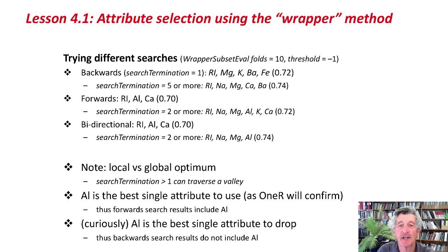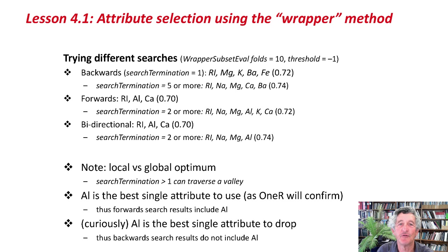It turns out that on this dataset, AL is the single best attribute to use — OneR will confirm that for you. So all forward search results will include AL. And curiously, AL is also the best single attribute to drop. So if you start with the full set, the best one to drop is AL. This kind of sounds pretty strange, and I must admit it is pretty unusual, but it's true, and it's certainly not impossible.